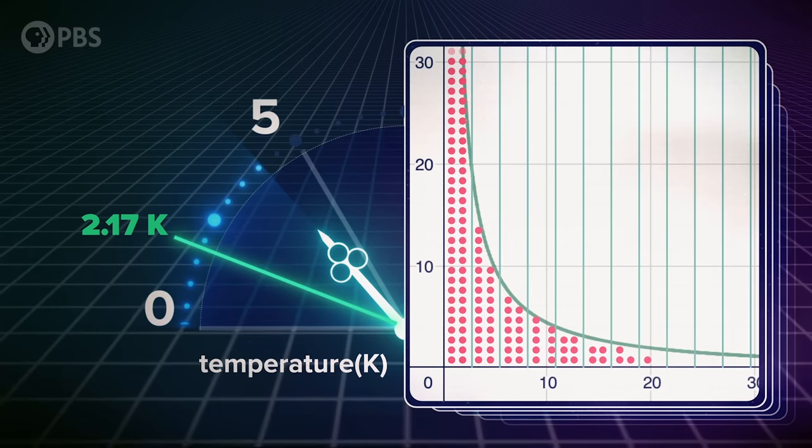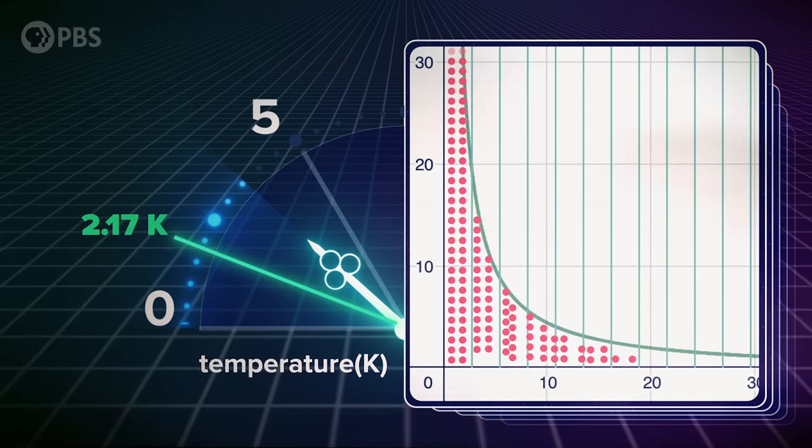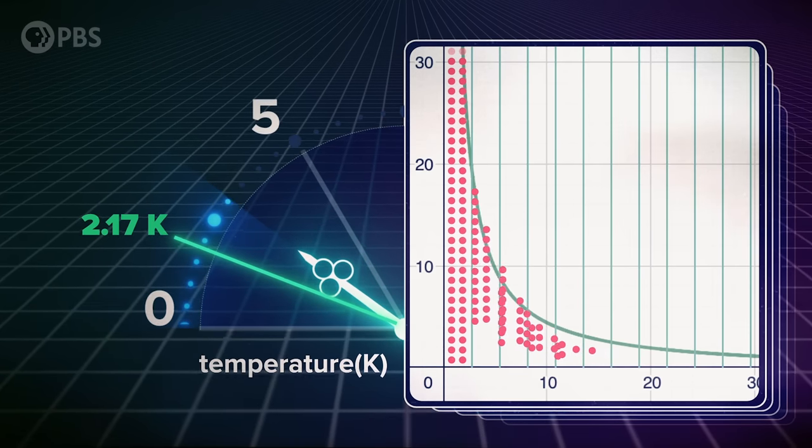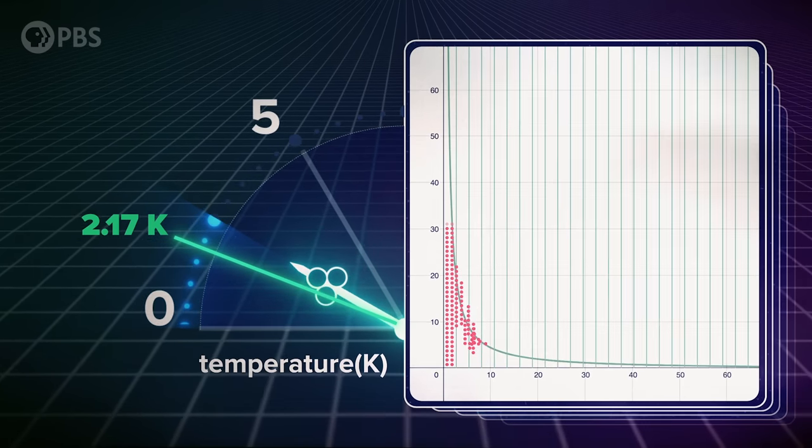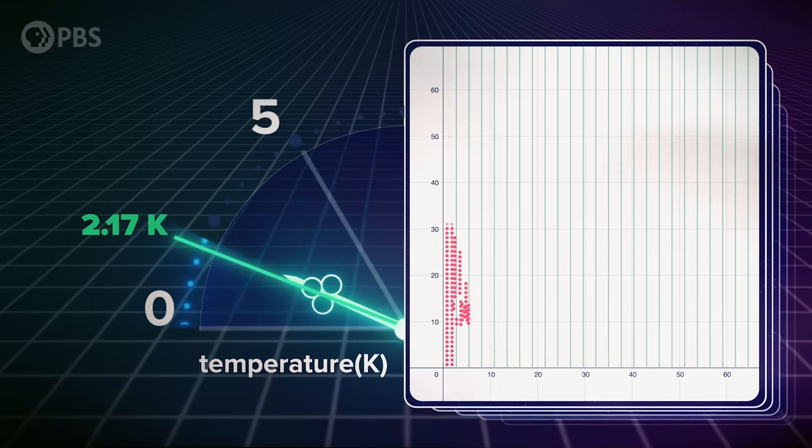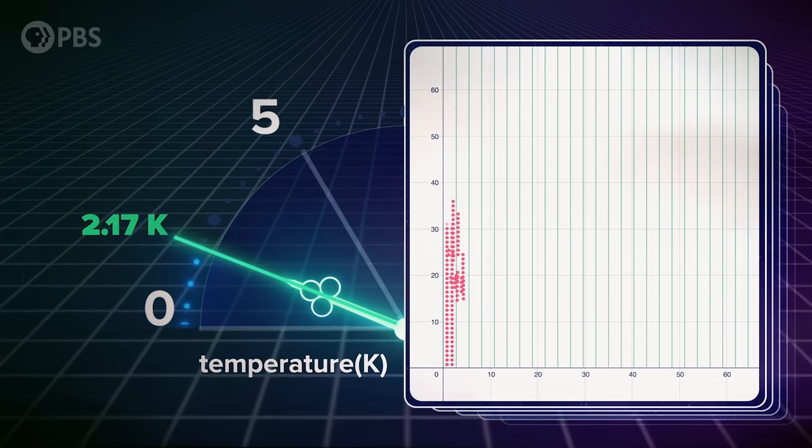For the bosonic helium-4 atoms, there's nothing stopping all particles from entering the lowest energy state. When we hit a temperature of 2.17 Kelvin, close to absolute zero, that's exactly what happens.